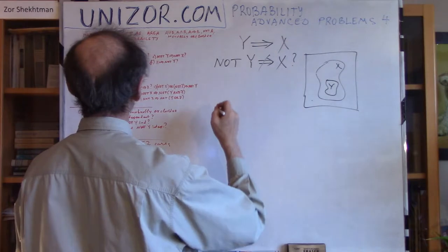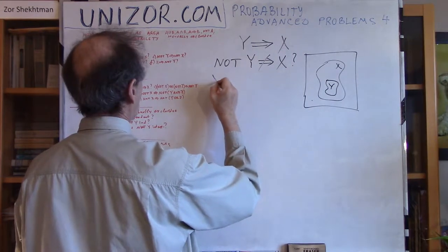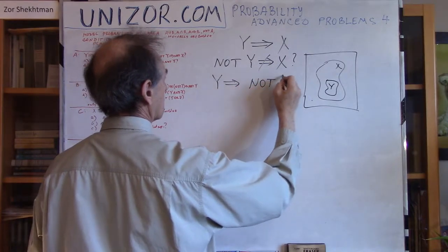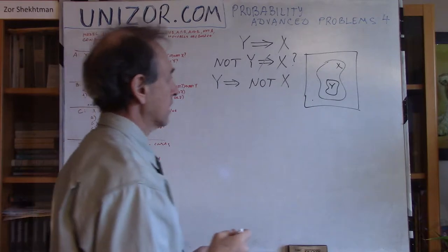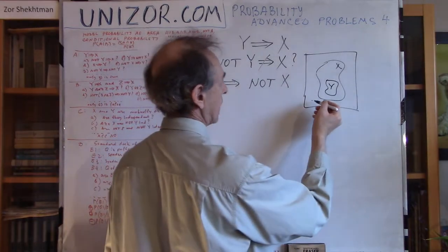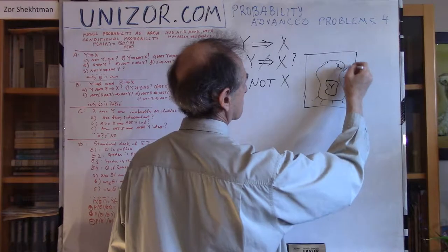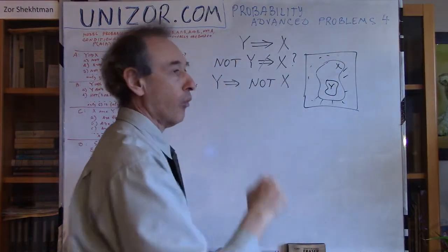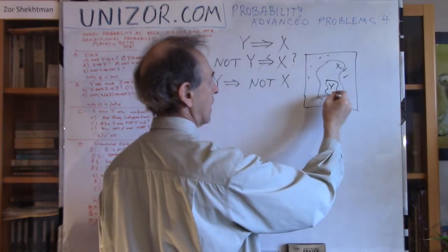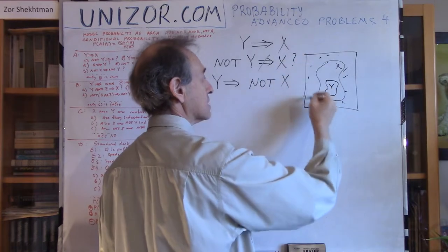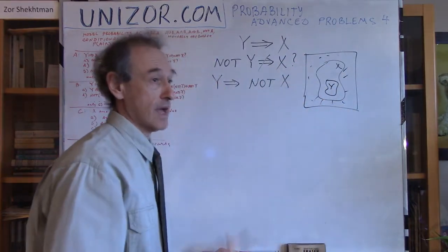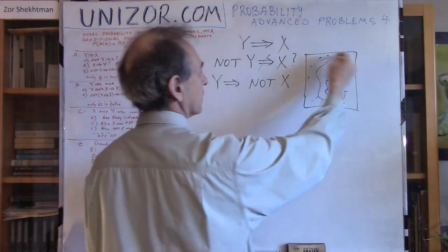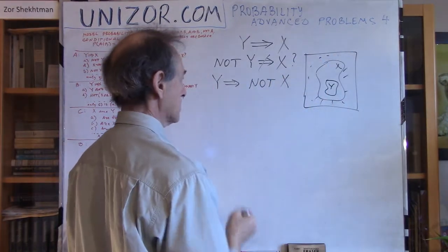Next: from Y follows NOT X. Is this right? NOT X is everything outside X — this area. I know my point falls into Y. Does it mean it automatically falls outside X? Absolutely not — it's just the opposite. We definitely know Y is inside X, so the point falls inside X, not outside. This is also false.